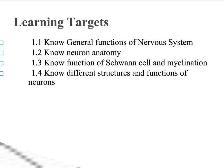Our learning targets for this particular lecture are that you know the general functions of the nervous system. You're going to learn the basic anatomy of a neuron. We're going to learn how Schwann cells and myelination help the function of a neuron. You're going to know the different structural types of neurons and the different functional types of neurons.